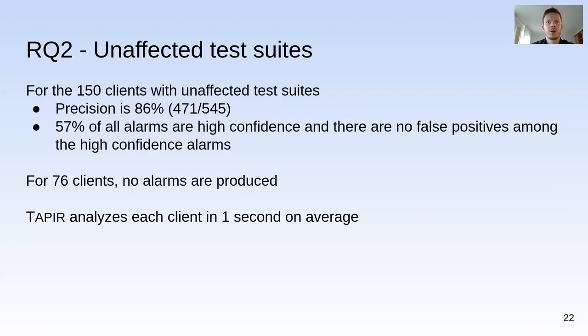For the unaffected test suite experiment, precision was also high at 86%, with more than half of alarms high confidence and none of these false positives. Interestingly, for 76% of client applications no alarms were produced at all. This illustrates that half of all clients are not affected by breaking changes in a dependency update, and most changelog information is irrelevant for most client developers. The running time of Tapir was on average one second per client for both experiments.